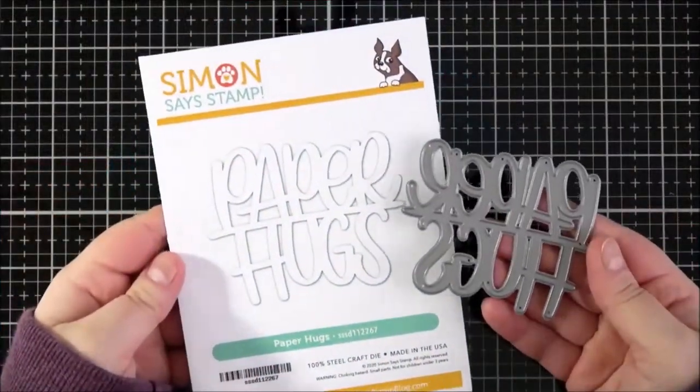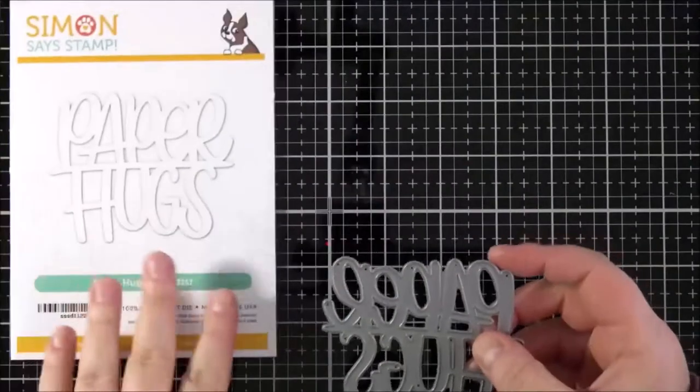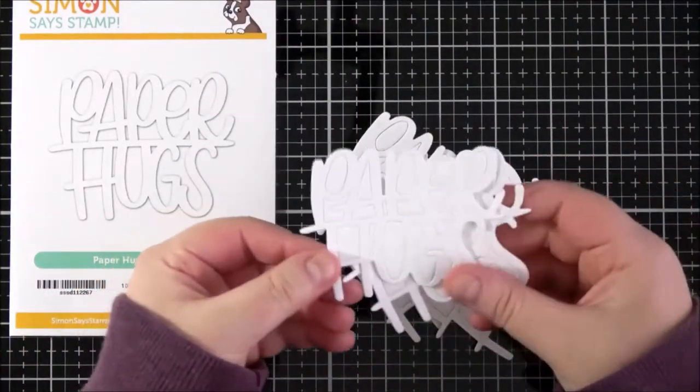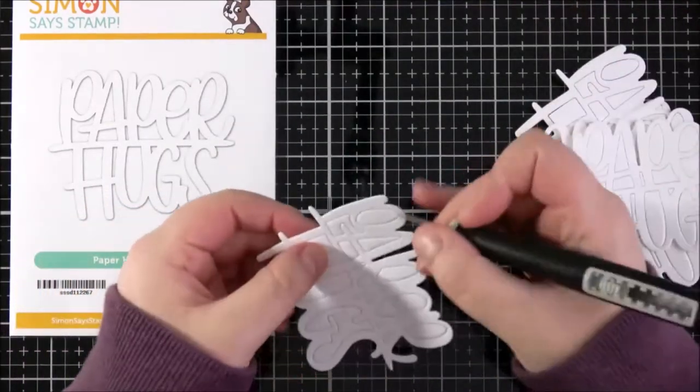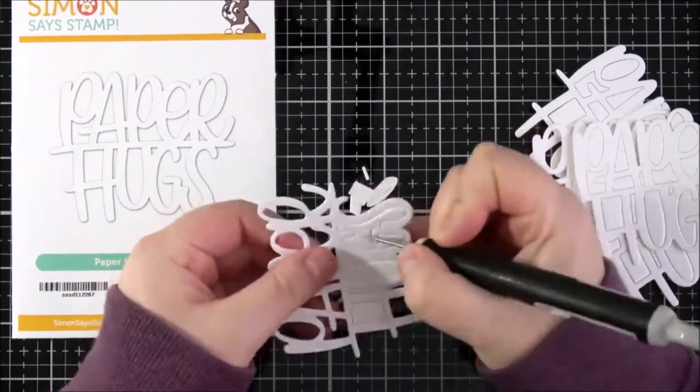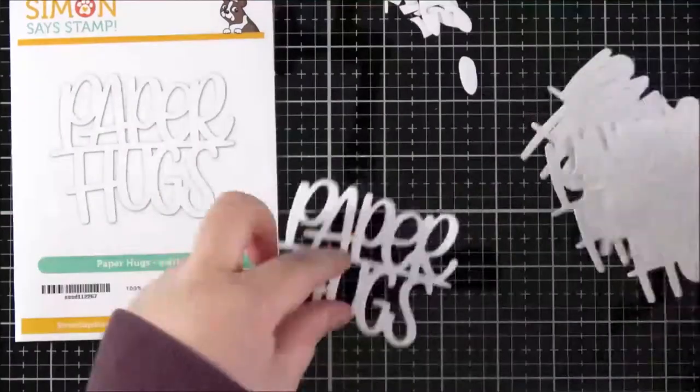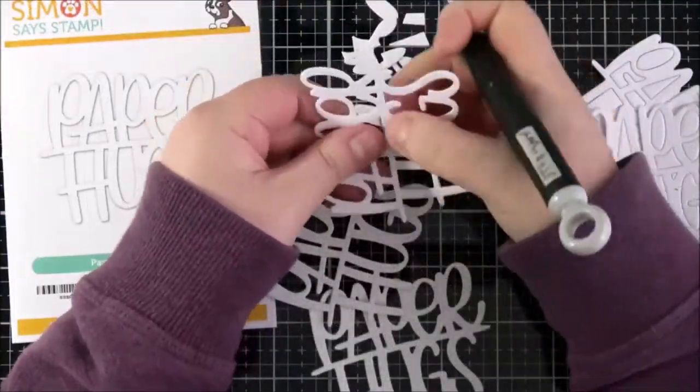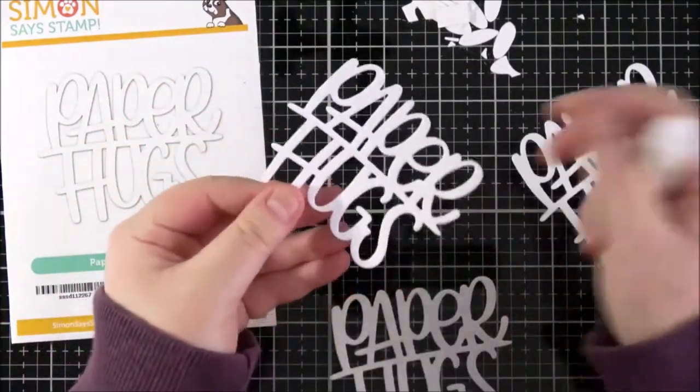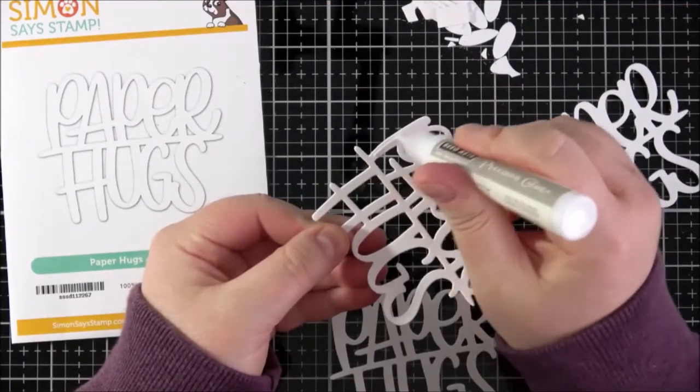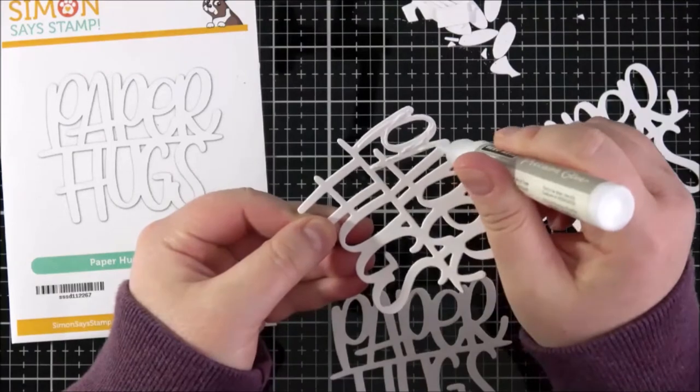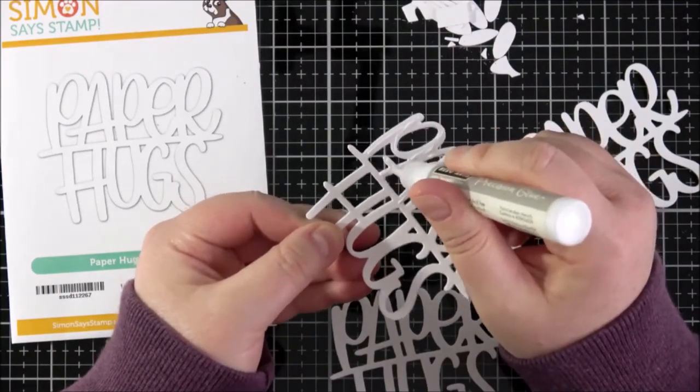Like I said this is all about experimentation. Next I'm taking the new paper hugs die from the Simon Says Stamp Dicember release and I've cut that six times from white cardstock. I'm just popping out all of the inside pieces with a pokey tool here and then I'm going to stack them one on top of another. So I want to have three high for each card. I think it's just nice to have that extra stability. So I'm just taking some Hero Arts Precision glue here and I'm just going to adhere them all on top of another.